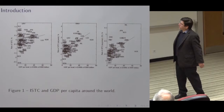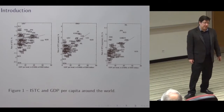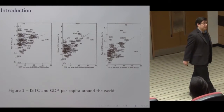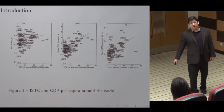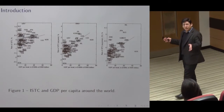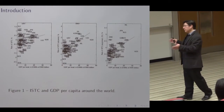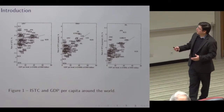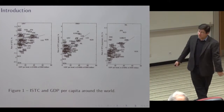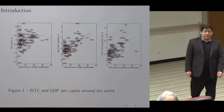Most of what we're going to be doing is just trying to repeat, basically, the exercise in Greenwood, Hercowitz, and Krusell — just trying to get an idea of what the numbers are. And then we're doing a little thing at the end, trying to get a sense of what might be underlying the differences.